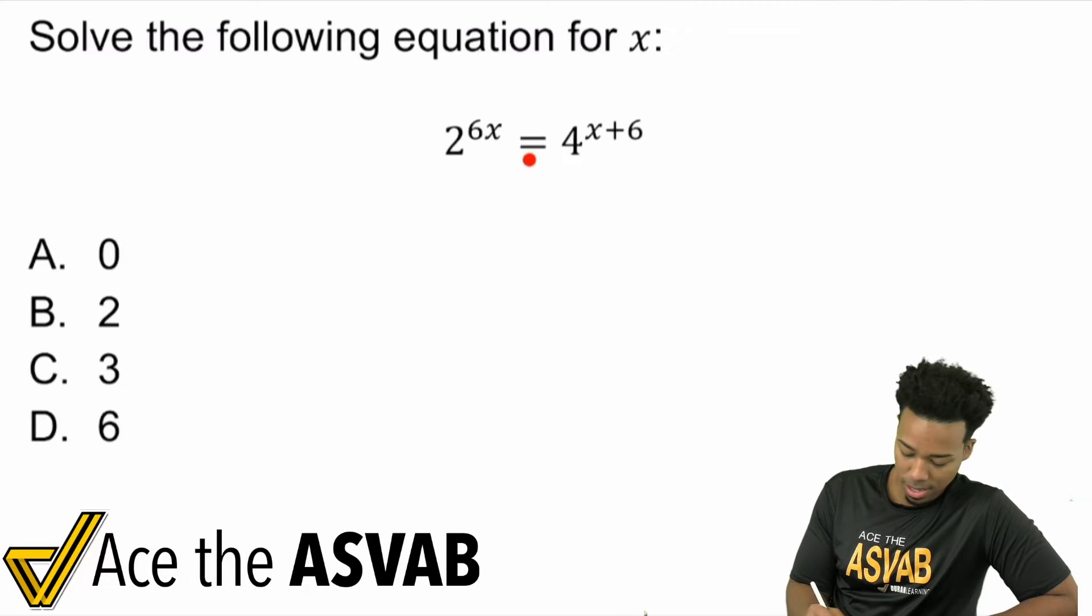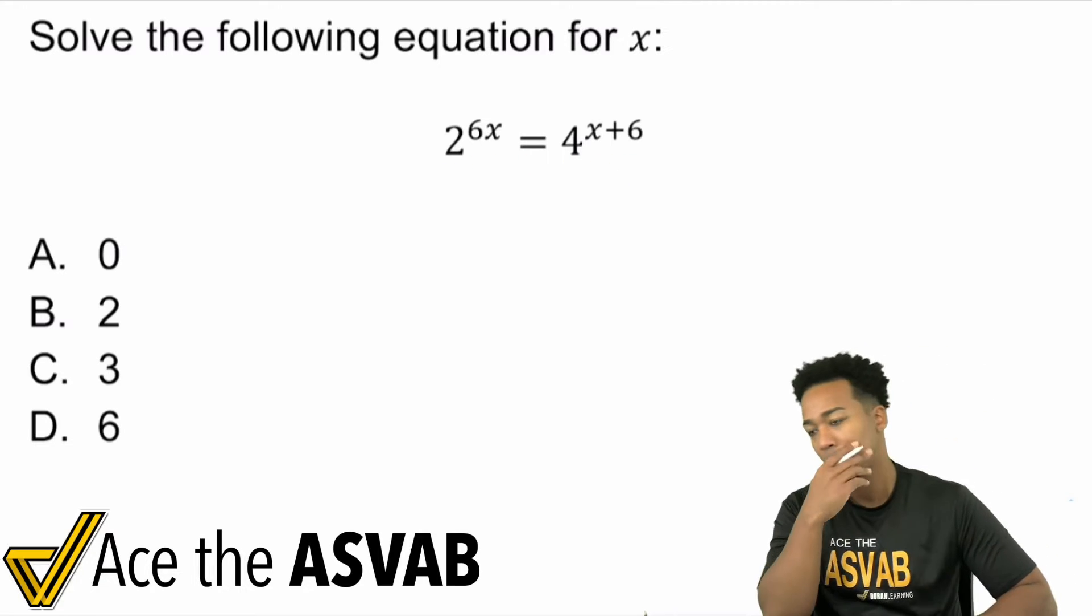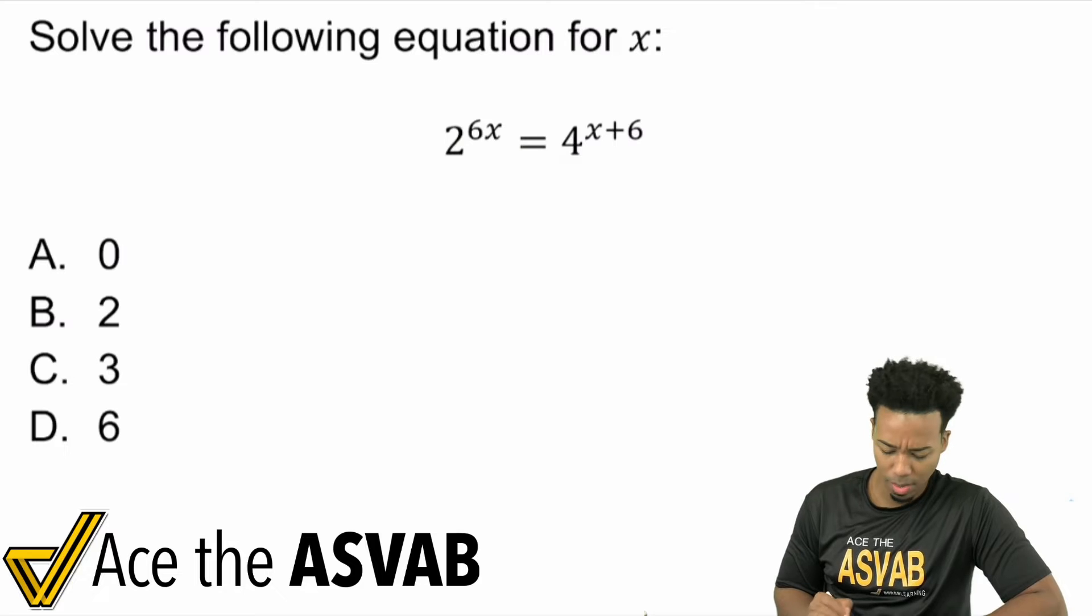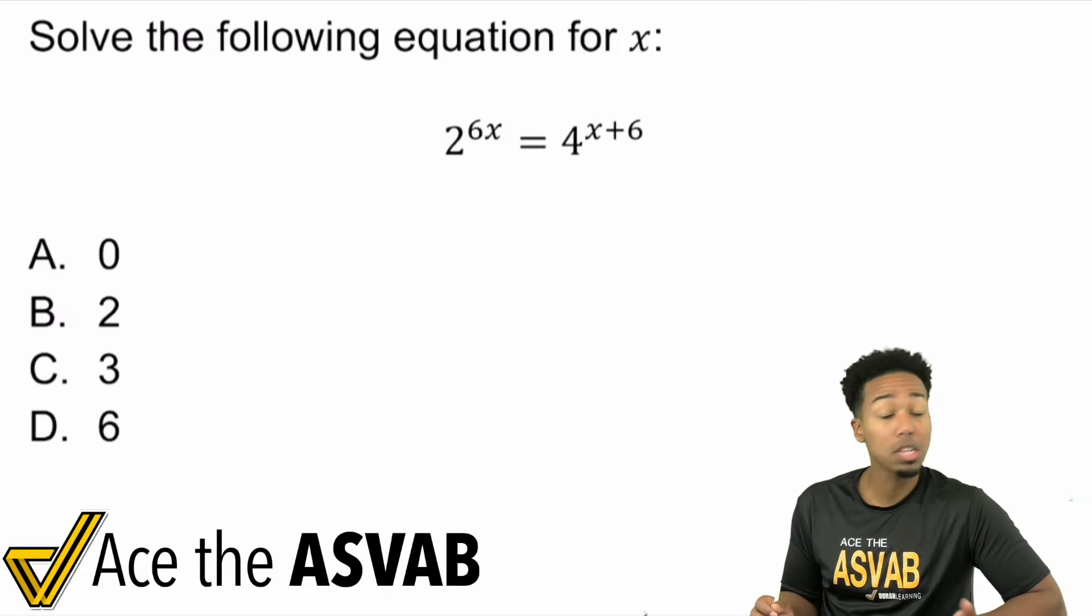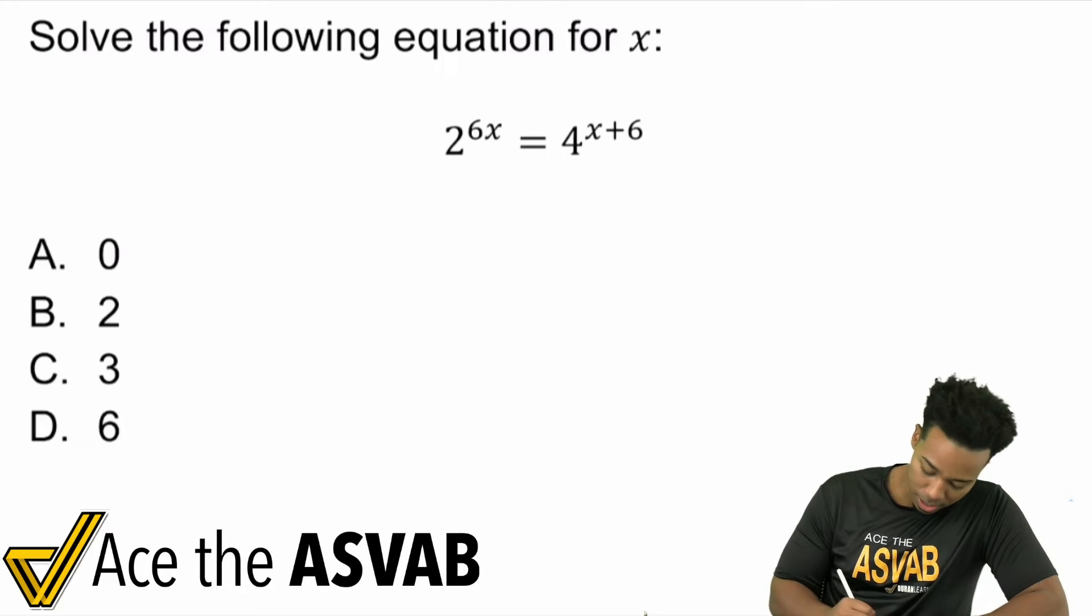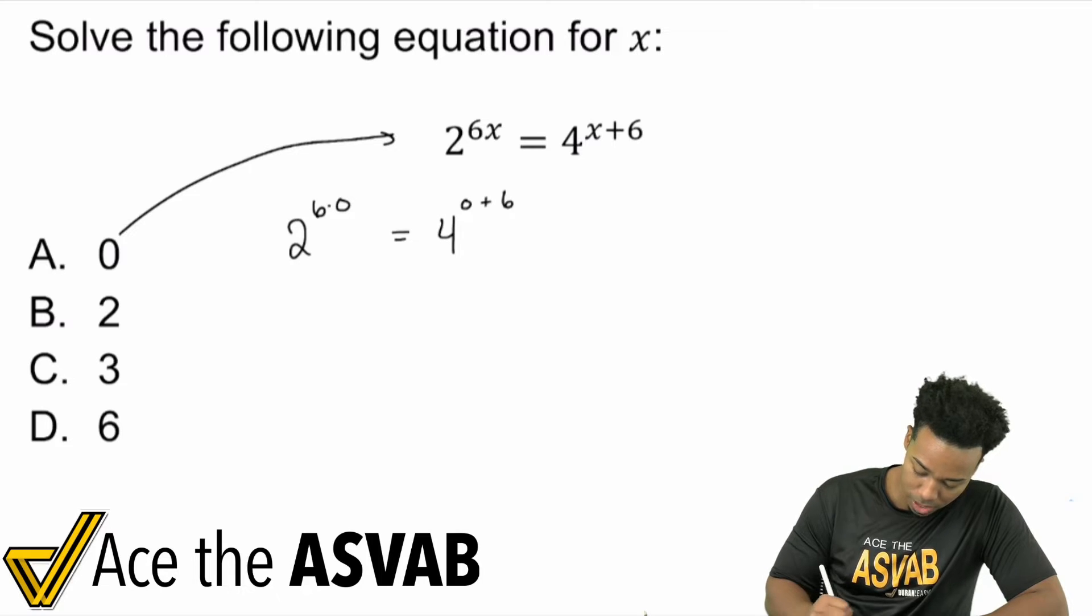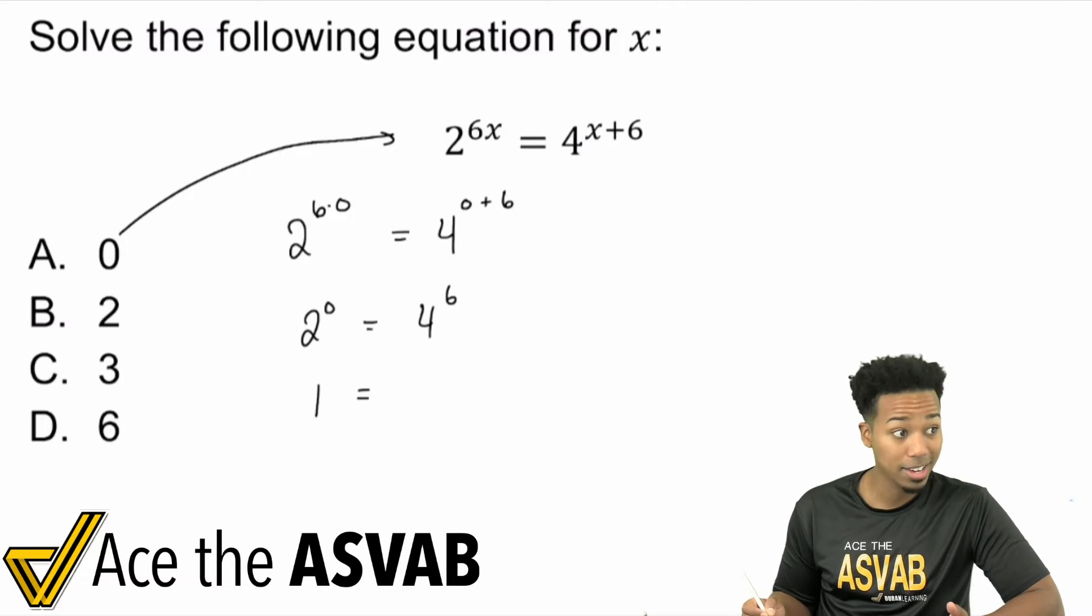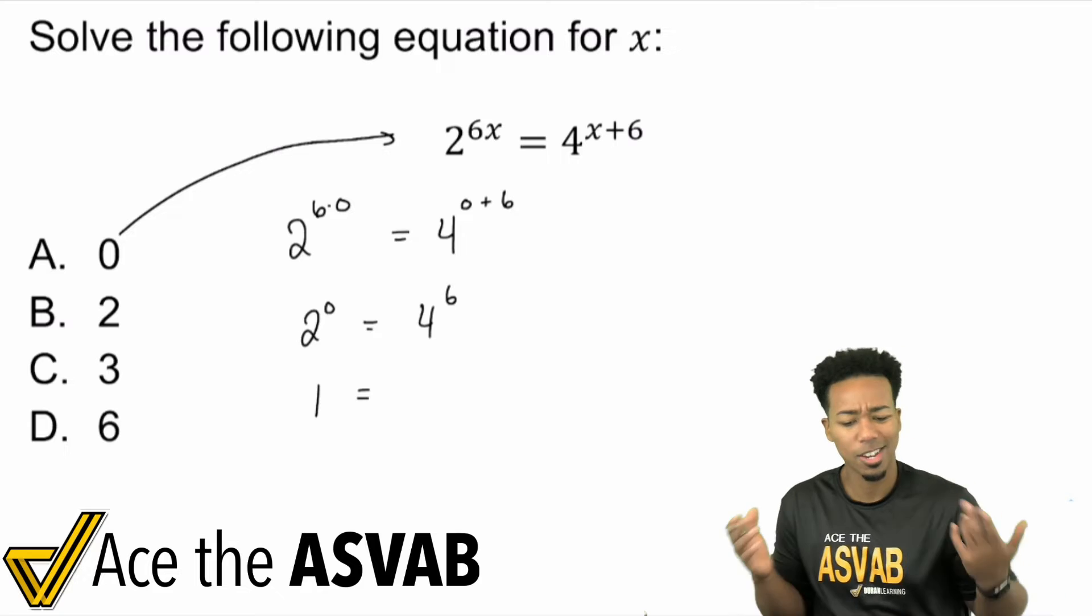So, let's ace the ASVAB. We have 2 to the power of 6x equals 4 to the power of x plus 6. You might be looking at a problem like this, and you might think, well, let me just go ahead and plug in my exponents, my x values, and see what happens. That is one way to do it. That absolutely is one way to do it. But it might be a very lengthy process. Because think about it. If you start plugging in, plug in 0. 2 to the power of 6 times 0 equals 4 to the power of 0 plus 6. So, 6 times 0 is going to be 0.